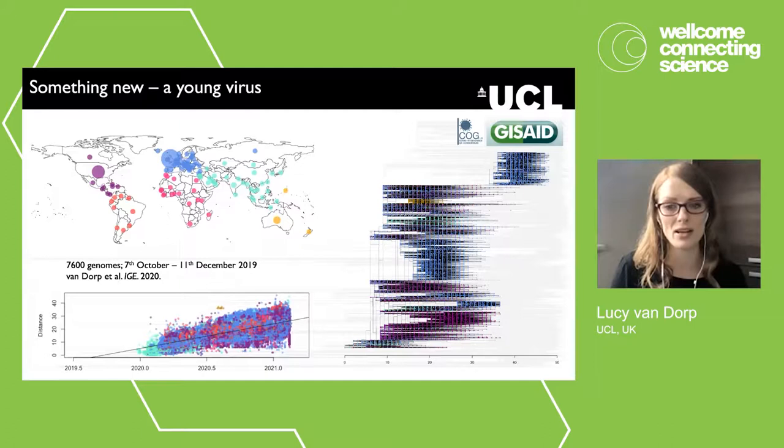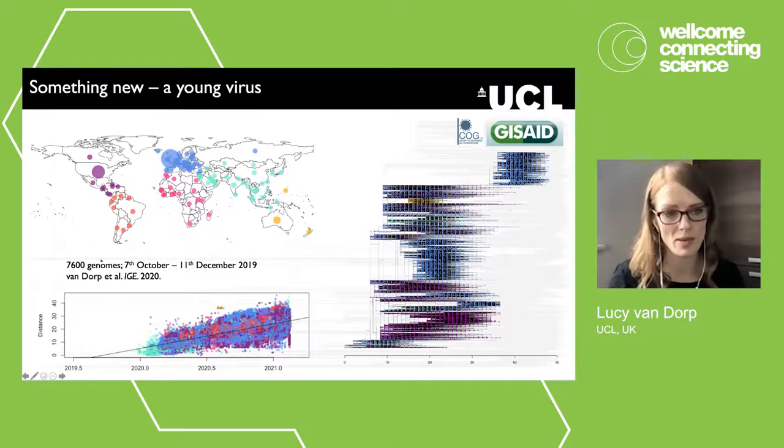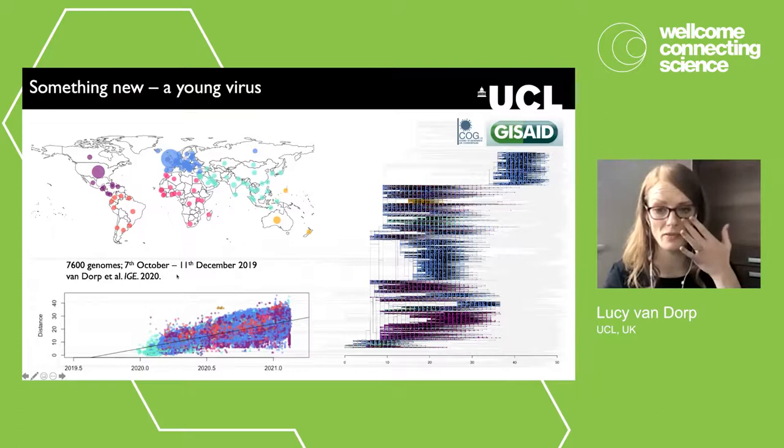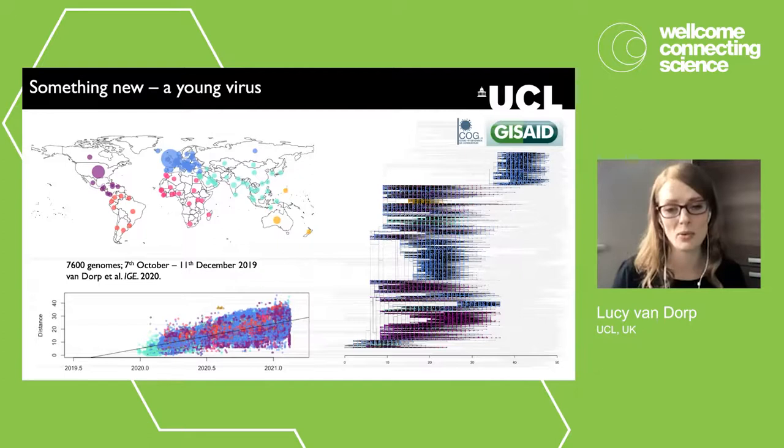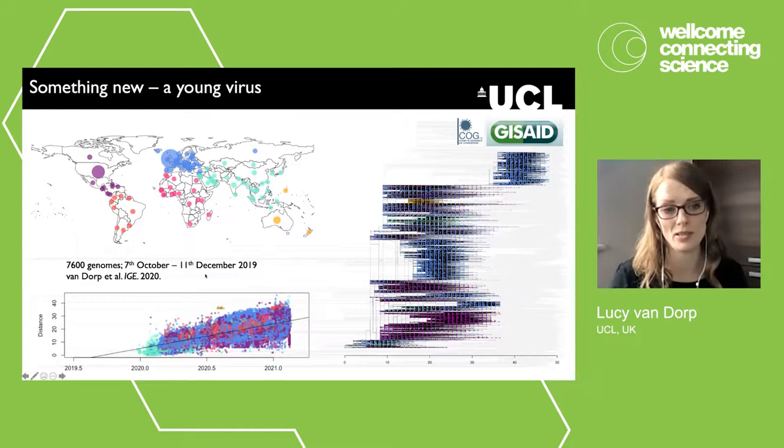We performed a more formal analysis over 7,600 genomes earlier in the pandemic, estimating a rate similar to the regression, and placing the time to the most recent common ancestor in the latter half of 2019 — as early as October through to early December. This time window from the phylogeny also corresponds to the likely timing of the original host jump of SARS-CoV-2 from a zoonotic reservoir into human circulation.